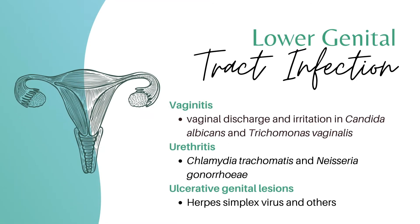Under lower genital tract infections, vaginitis presents with vaginal discharge and irritation and is usually caused by Candida albicans and Trichomonas vaginalis. Urethritis is usually caused by Chlamydia trachomatis and Neisseria gonorrhea. Causes for ulcerative lesions include herpes simplex virus and other STIs.